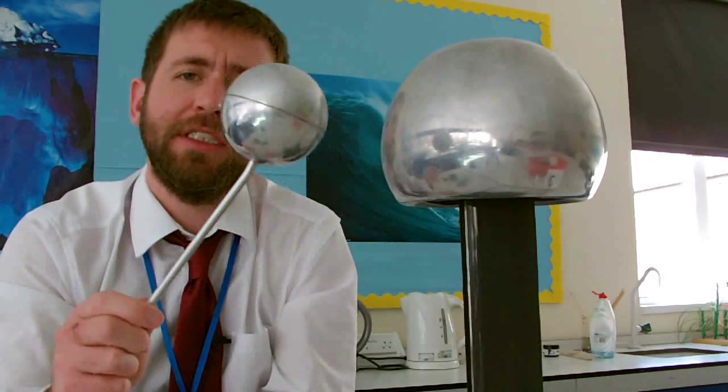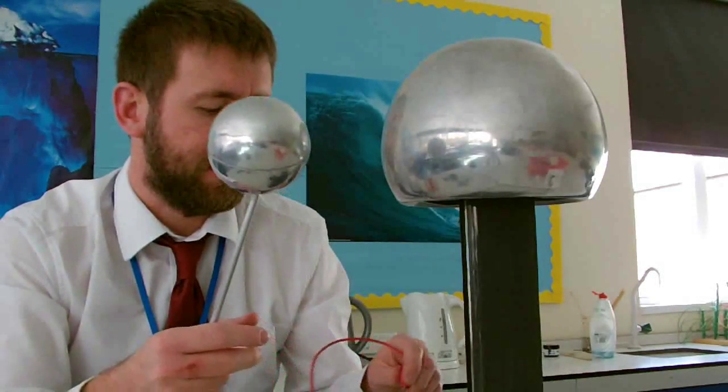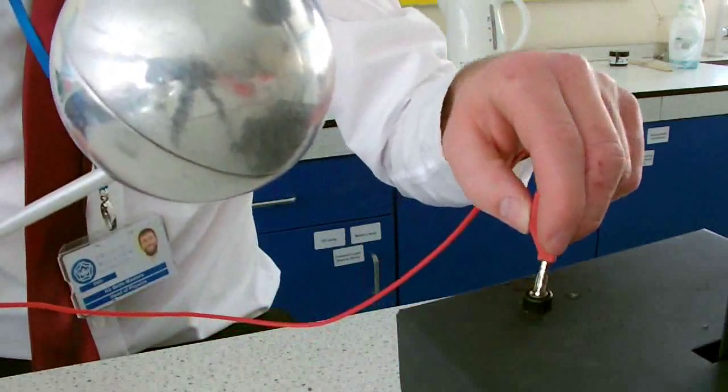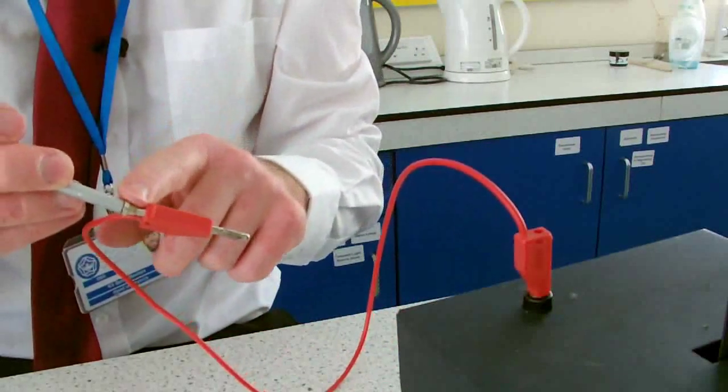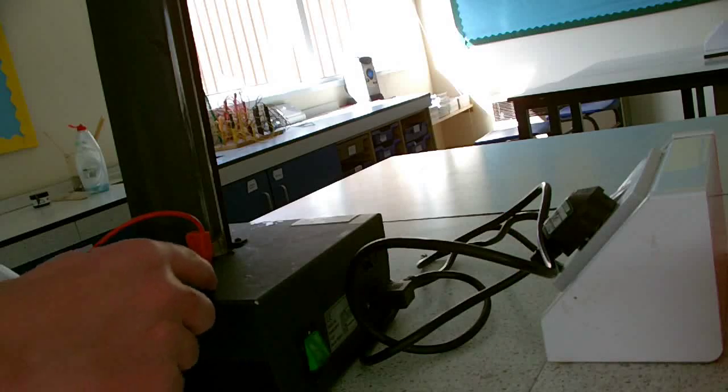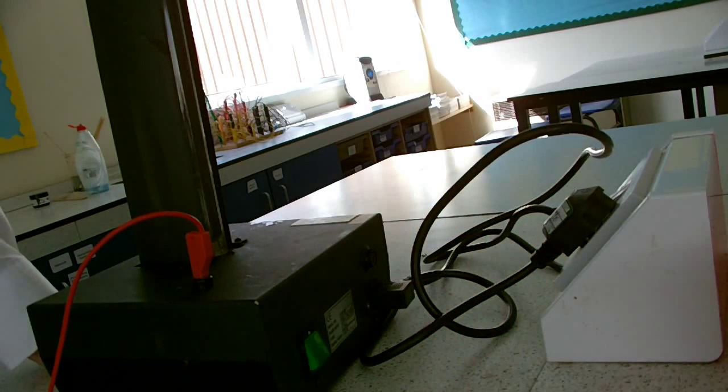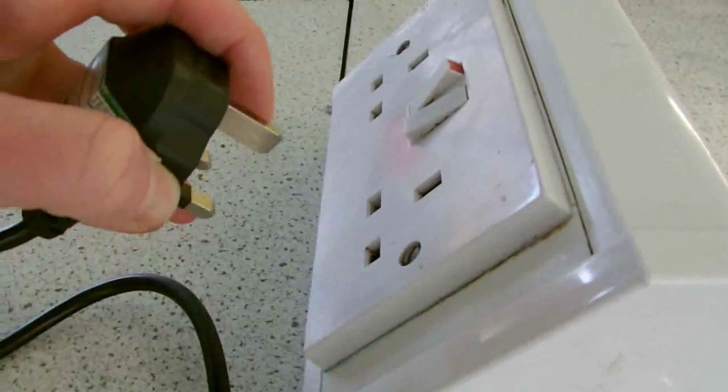And I also use this cylinder here which we can plug into the Van de Graaff generator which has now a connection down through to earth. And I can plug this sphere into this connector here which is a connection from the bottom of the sphere all the way through this wire down through the Van de Graaff generator through the mains wire down into the earth socket on the plug, and the earth conductor which is literally buried underneath the building.